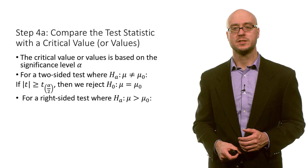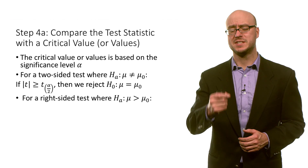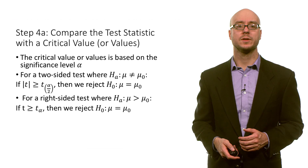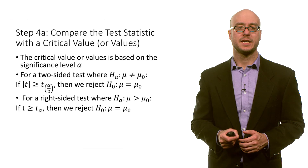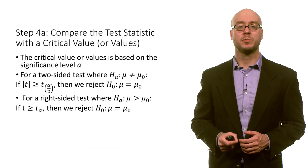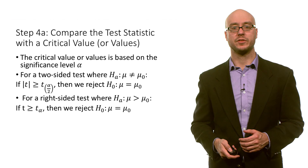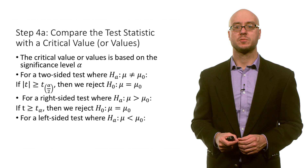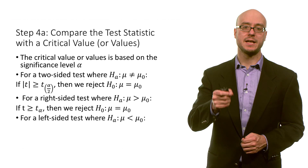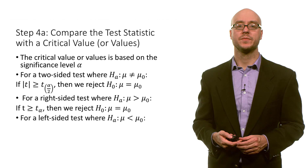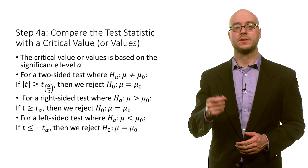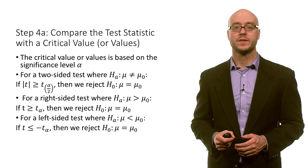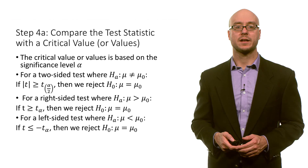For a right-sided test, in which the alternative is that the population mean is greater than the claimed value of the null, if our t-test statistic is greater than or equal to t-alpha, then we reject the null. And for a left-sided test, where the alternative is that the population mean is less than the claimed value, if our t-test statistic is less than or equal to negative t-alpha, then we reject the null.